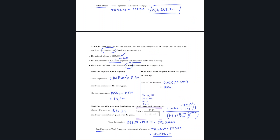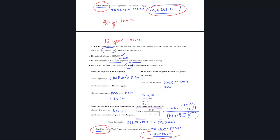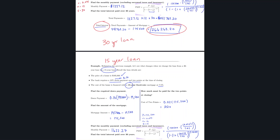Comparing the two examples — the only difference was 30 years versus 15 years. The total interest for the 30-year loan was $266,263.20, more than twice the 15-year interest of $116,508.66. The monthly payment for the 30-year was $1,227.12, while the 15-year monthly payment was $1,622.27.